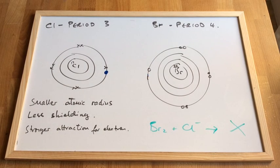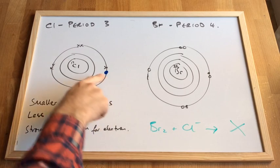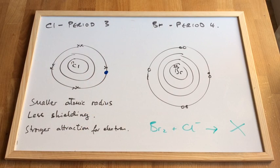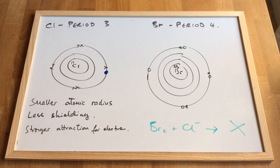We'll flip the scenario around now and say what would happen if you had bromine and chloride. There's the blue electron over there now. Can bromine oxidize the chlorine in the chloride ion? And the answer is no, for the same reasons. The chlorine here is holding on to that electron more strongly than the bromine is able to prise it away. And again, it's due to the smaller atomic radius, the less shielding from it being in period 3 versus period 4, and so it's got a stronger attraction for the electron. Bromine can't take it. So bromine is not a powerful enough oxidizing agent.